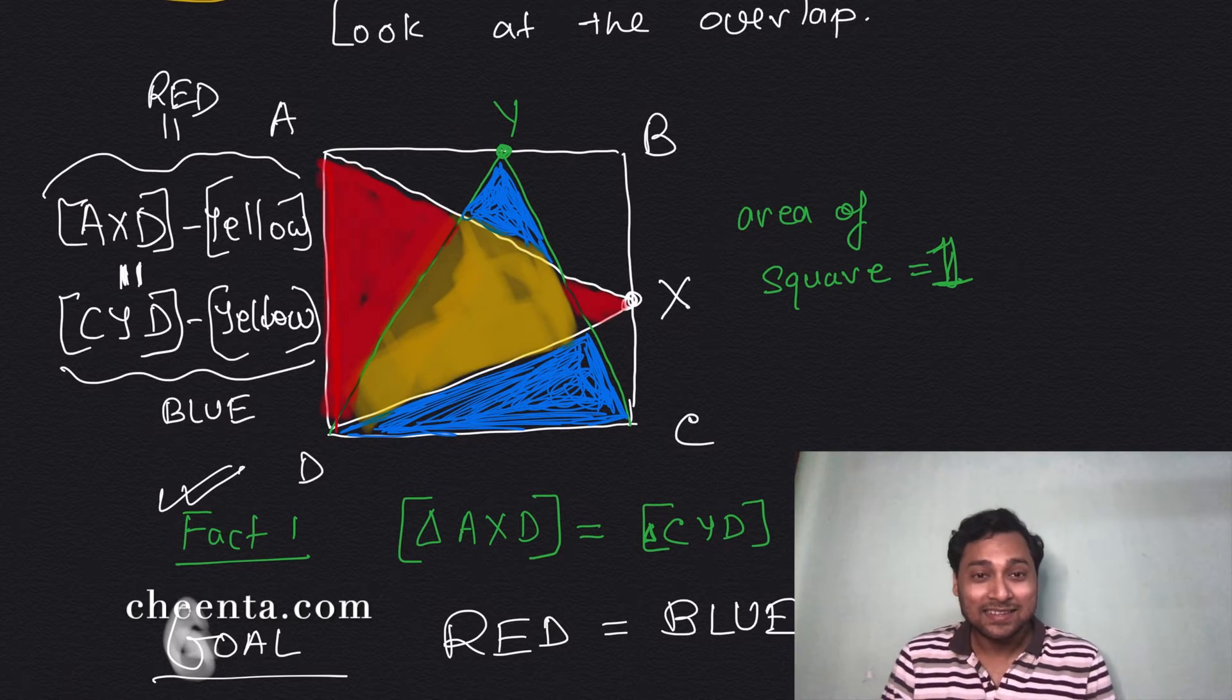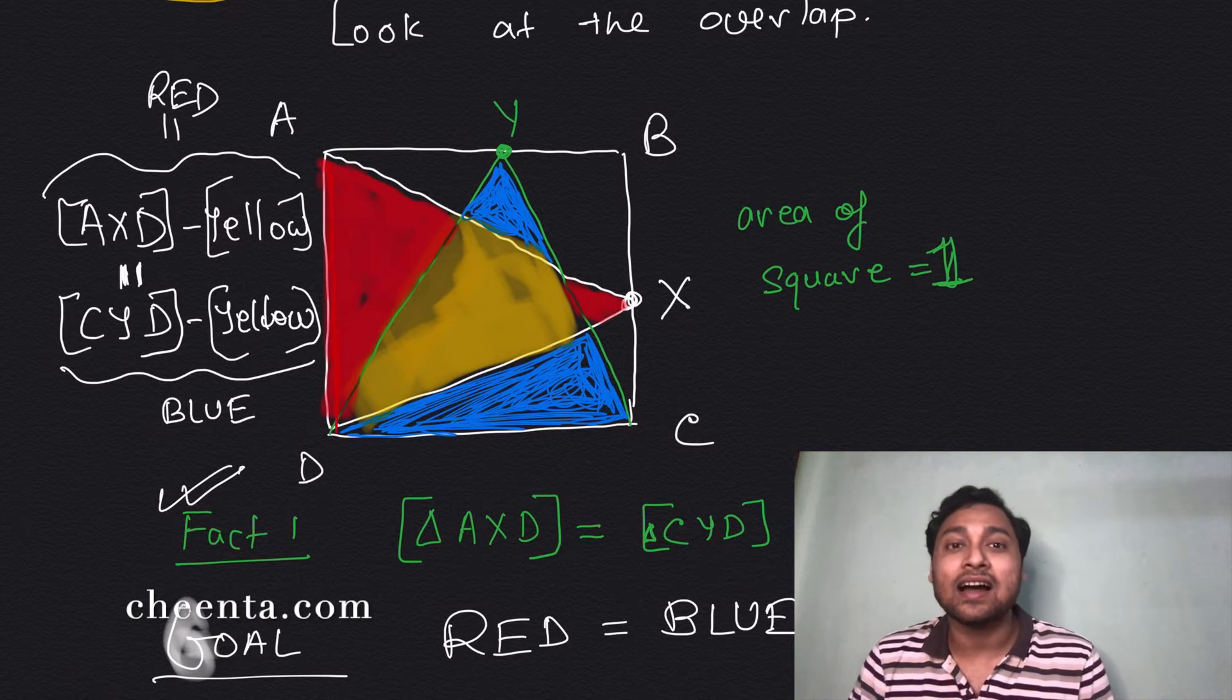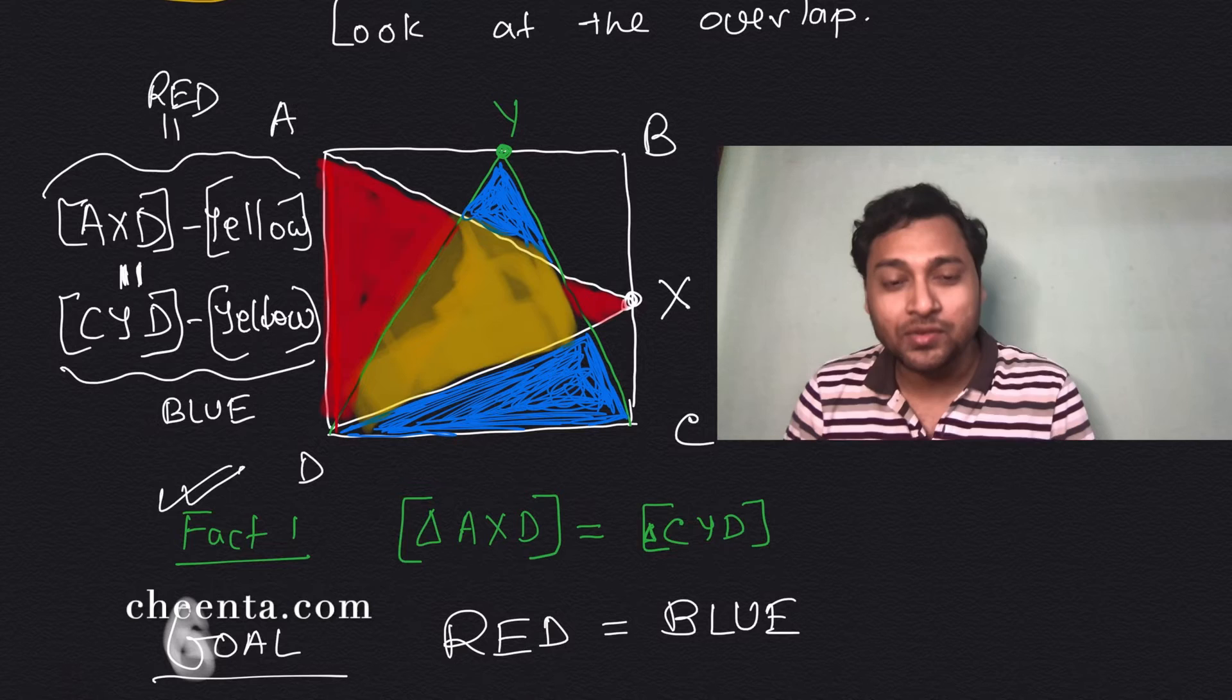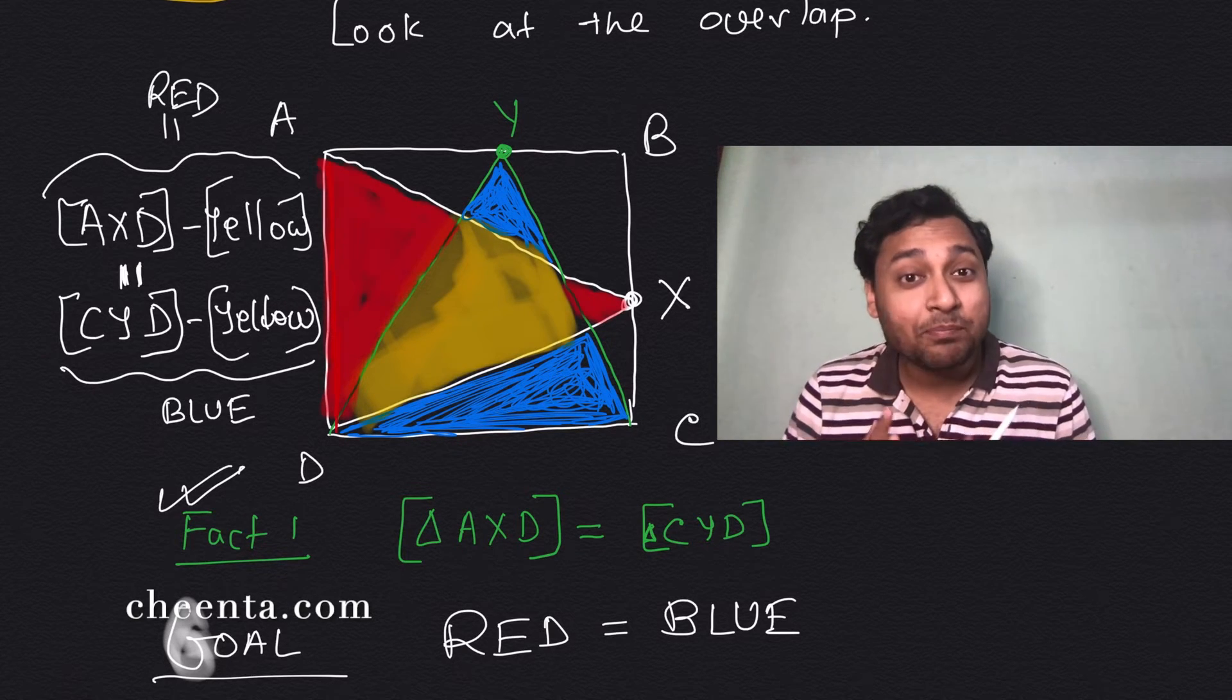That's it. So that's why the red and the blue regions are equal. So this is the carpet strategy. It's a very simple, intuitive, and beautiful strategy in geometry. You can also create pictures.